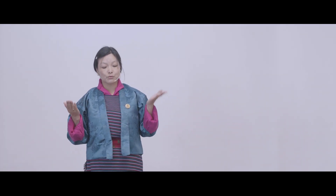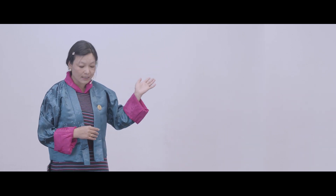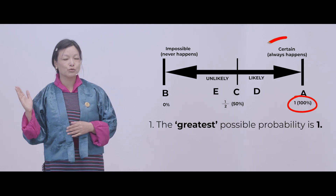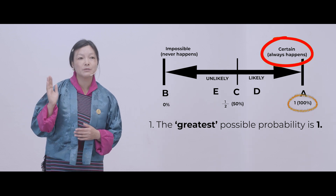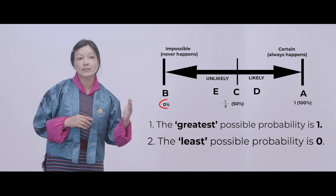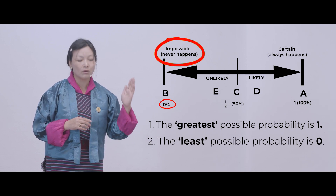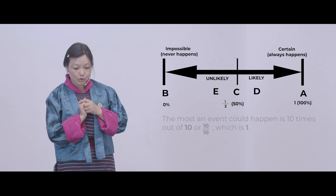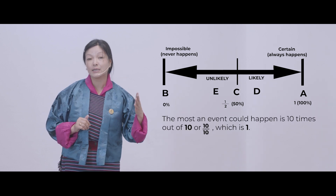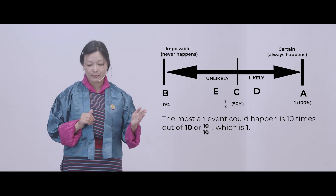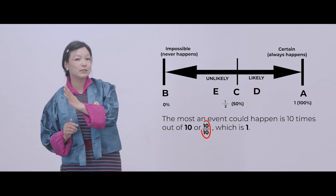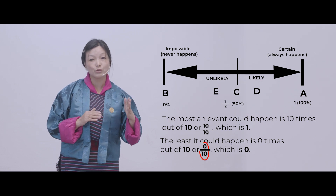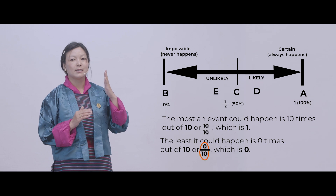Let's discuss once more about the probability scale. The greatest possible probability is 1 because it is certain. The least possible probability is 0 because it is impossible — the event never occurs. For example, if you did an experiment 10 times, the most an event could happen is 10 times out of 10, which is 10 over 10. On the scale, we put it as 1. And the least it could happen is 0 over 10, which is impossible.